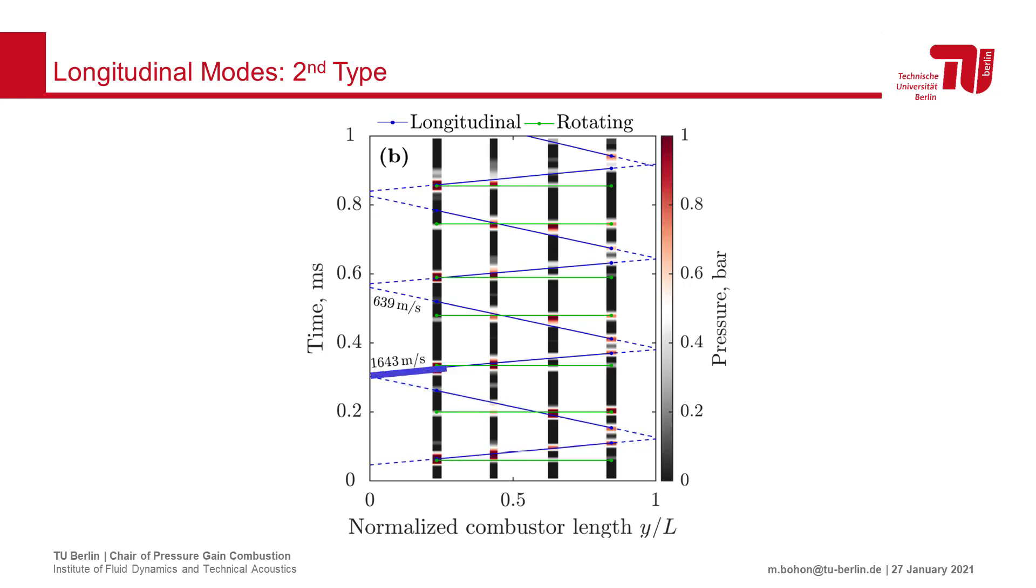We can see at the injector end, the pressure wave for the blue line begins very intense and propagates down the length of the combustor at a high speed, where it reflects and returns upstream.